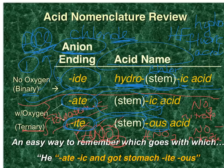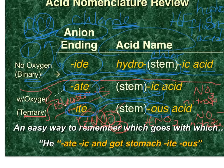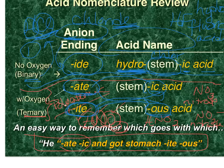Here's a mnemonic to help remember: 'He ate ick and got stomach-ite-us.' So '-ate' goes with '-ic' when naming ternary acids, and '-ite' goes with '-ous'.